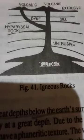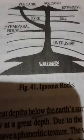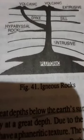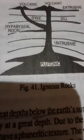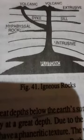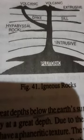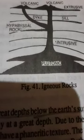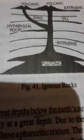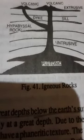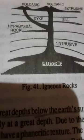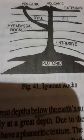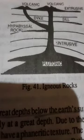Glacial sedimentary rock. The sediments deposited by glaciers are called glacial sedimentary rock. These deposits are also known as moraine. Moraine is an accumulation of material which has been transported or deposited by ice.